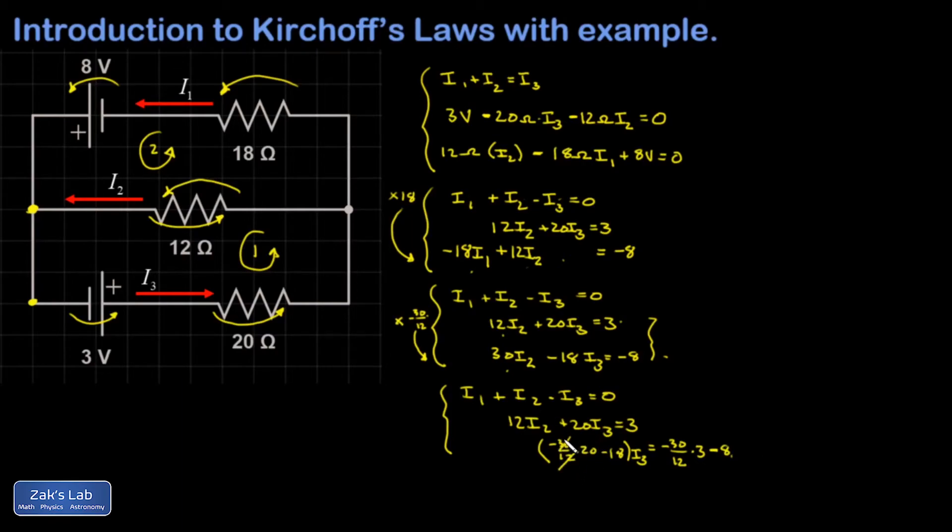Cancel a 6 out of the 12 and the 30, leaving me with a 5 in the numerator, 2 in the denominator. Cancel a 2 out of the 20, leaving me with a 10. This gives me negative 50 minus 18 i3 on the left-hand side. And then on the right-hand side, I can cancel a 3 out of the 12, leaving me with a 4 in the denominator. And 30 over 4 reduces to 15 over 2. So I have negative 15 halves minus 8.